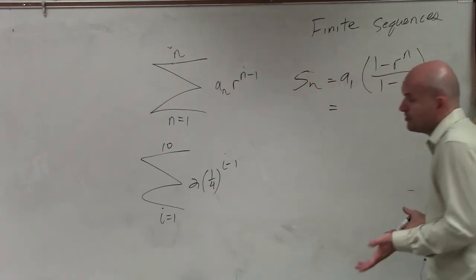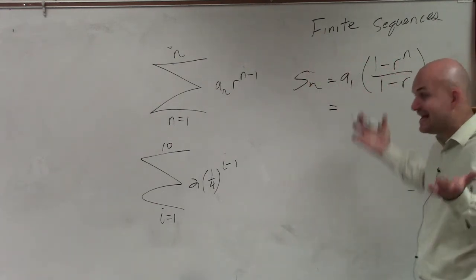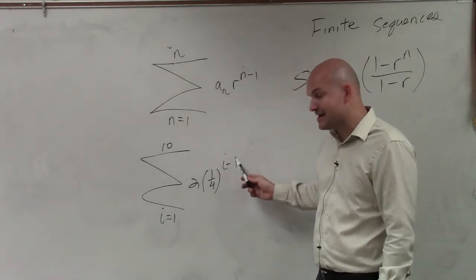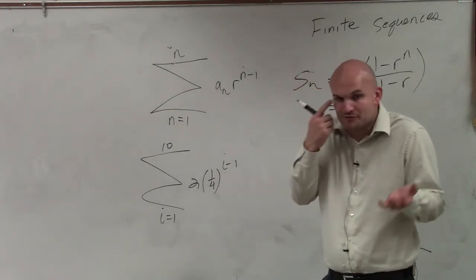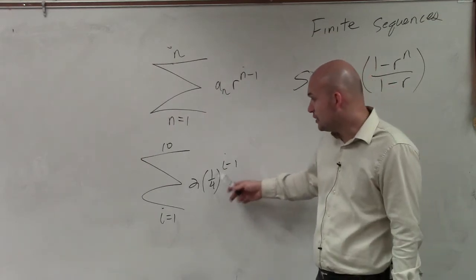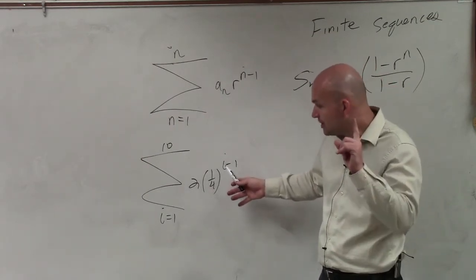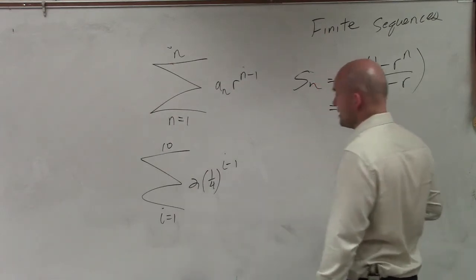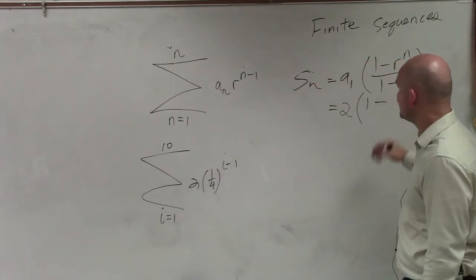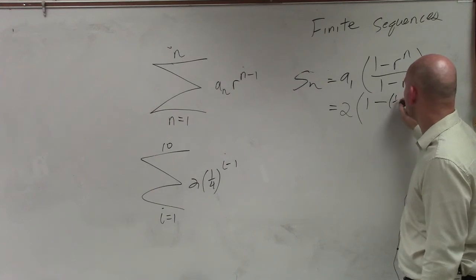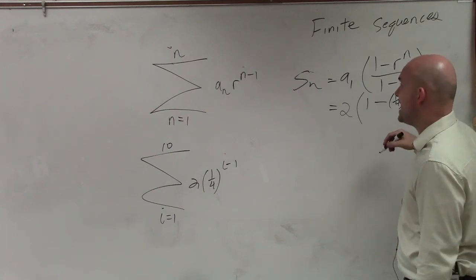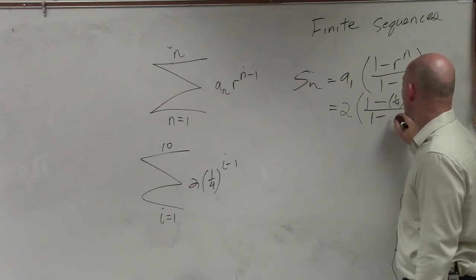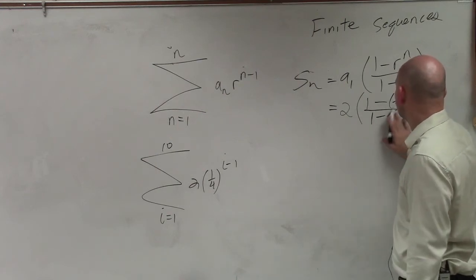To plug it into this formula, we need to figure out what a₁ is. a₁ is the easiest to figure out — you put 1 in there: 1 minus 1 is 0, and (1/4) raised to the 0 power is 1, so 1 times 2 is 2. So a₁ equals 2. Then we have 1 minus our ratio (1/4), raised to n which is 10, all over 1 minus 1/4.